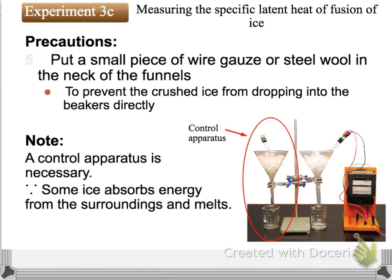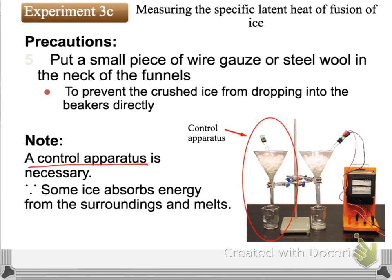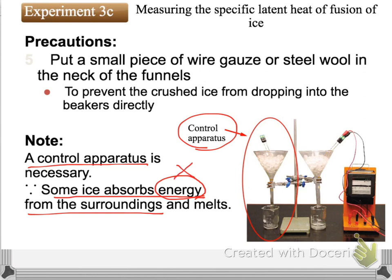It is important — it can help us eliminate the error and make a more accurate result. Your textbook mentions that the control apparatus is necessary because some ice absorbs energy from the surrounding. When we really carry out the experiment using the control set, we cannot directly measure how much energy is absorbed by the ice from the surrounding, but we can use another way — using the control apparatus to find out the mass of ice melted by the surrounding.